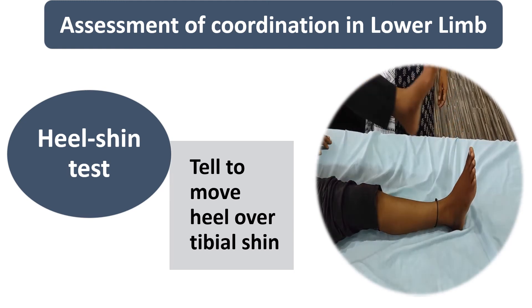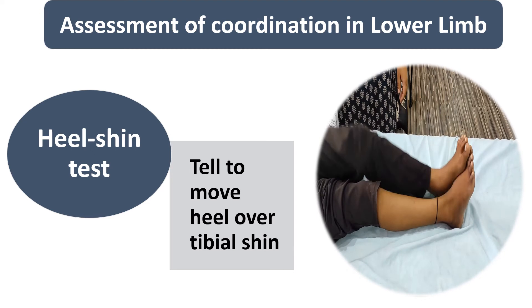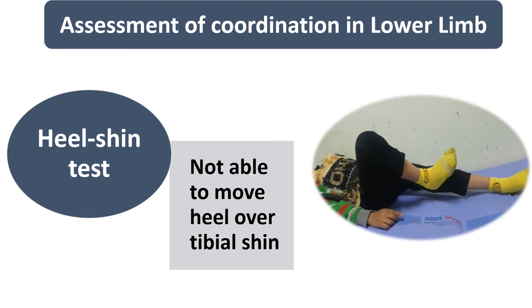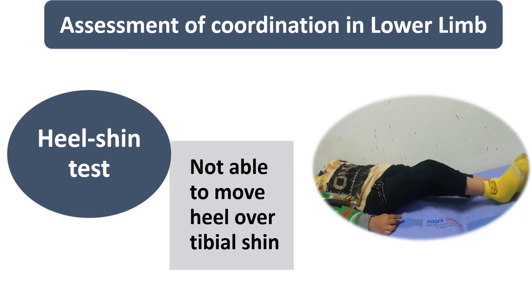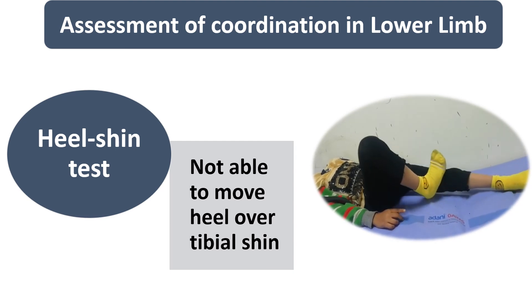For coordination assessment in the lower limb, the heel-shin test is performed. We ask the child to place the heel of one foot on the knee of the other leg, then push the heel along the tibial shin in a straight line and repeat several times. If the child can perform this, lower limb coordination is normal. In this video, one child is able to perform it; in another, the child is not able to perform the heel-shin test — unable to localize the knee or move the heel over the tibial shin. This is seen in cerebellar disease or sometimes in sensory ataxia.